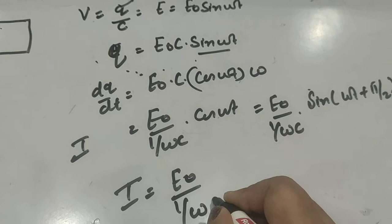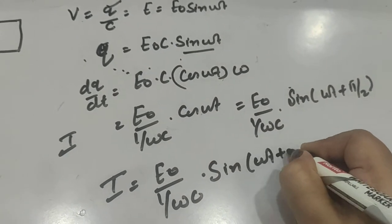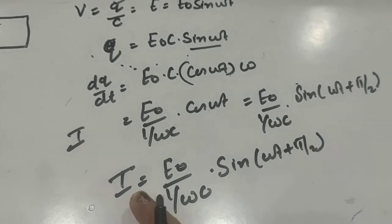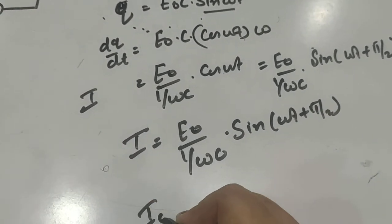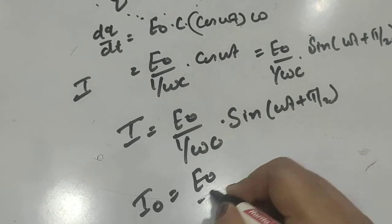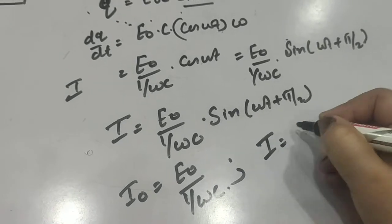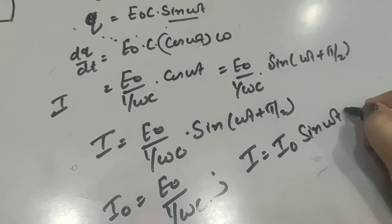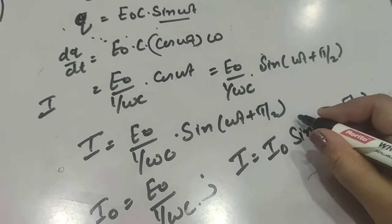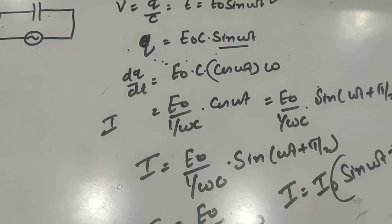Now this current I comes out to be E₀ divided by (1/ωC) sin(ωt + π/2). This current is maximum when the sine factor equals 1, so I₀ = E₀/(1/ωC). Accordingly, this equation I can be written as I = I₀ sin(ωt + π/2). Now if we compare this current with this voltage, we know that this current I is leading voltage by π/2.